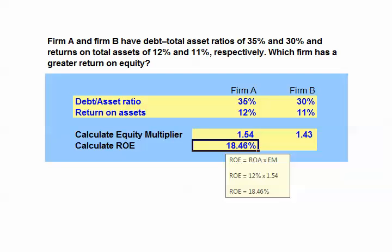we'll take its 12% return on assets and multiply it by its 1.54 equity multiplier, and we get a return on equity of 18.46%.